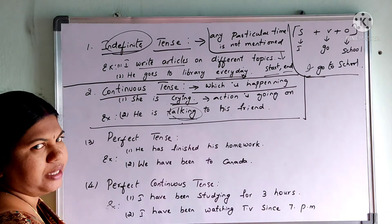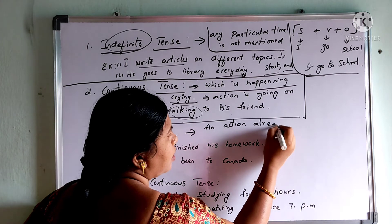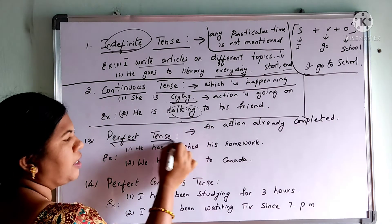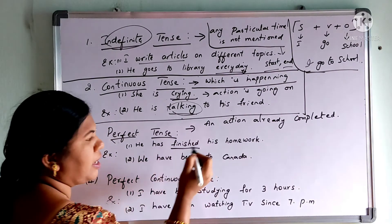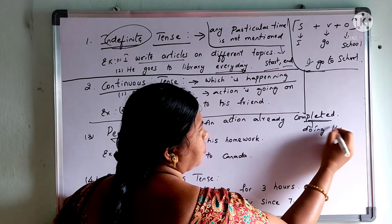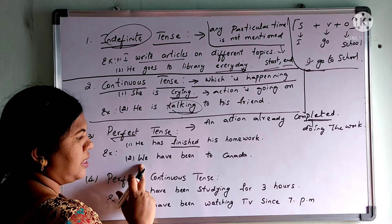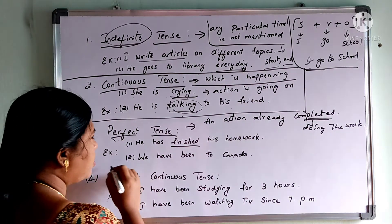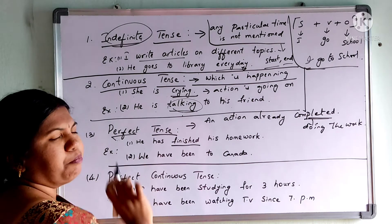When you take the third one — perfect tense. Perfect tense is an action that has already been completed. For example: he has finished his homework — he already completed doing his work. We have been to Canada — we already went to Canada, that action has been completed. Such kind of tense is called a perfect tense.